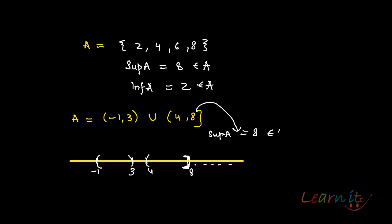The infimum of A, the greatest lower bound, will be -1. But -1 does not belong to A because that part is an open interval. So we can have a case where the supremum belongs to A but the infimum does not — these sorts of examples do exist.